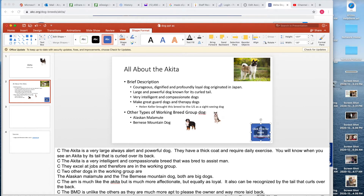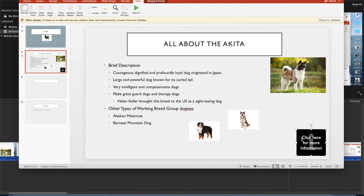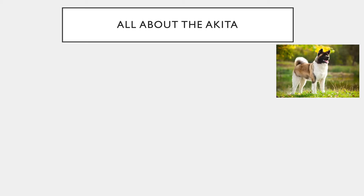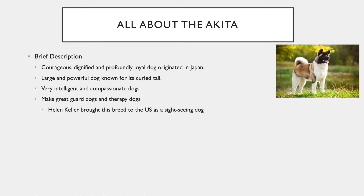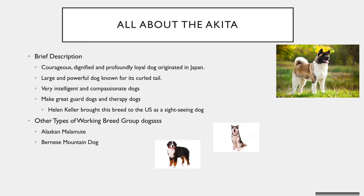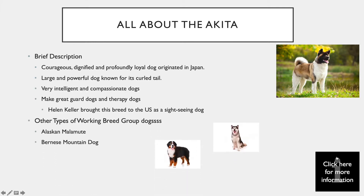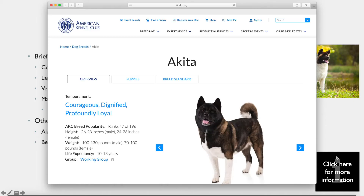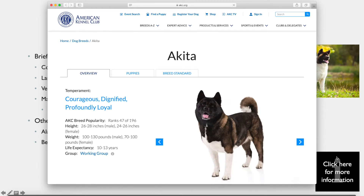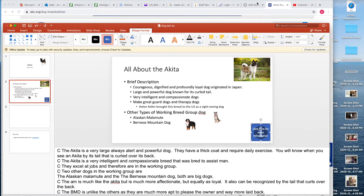The color and maybe even the location might have to change. When you click on the hyperlink in this editing view nothing happens, but if I go to Presentation view and click on it, see how it gives me a little finger cursor? When you hover your mouse over it, it shows you the website, and when you click on it it hyperlinks and goes to that website.